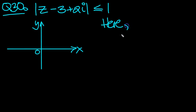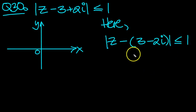So here we see that z minus the point 3 minus 2i in a bracket is within this modulus, which is less than or equal to 1. So the distance between the point z and this point is always less than or equal to 1.